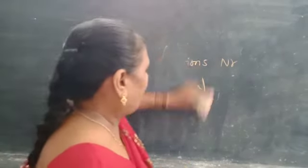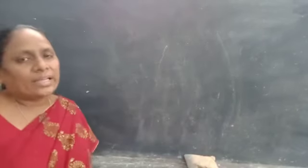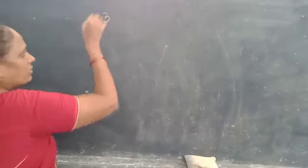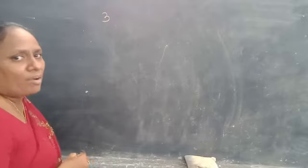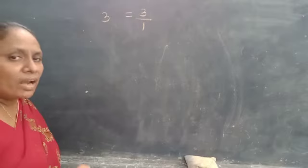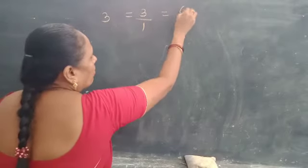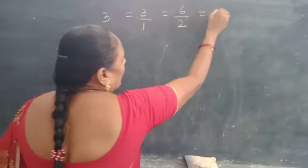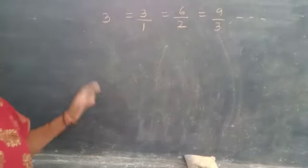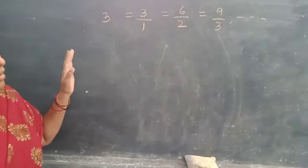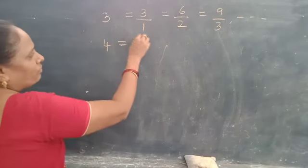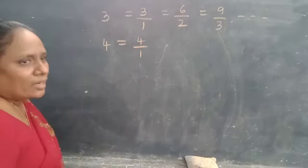How do we write natural numbers, whole numbers, and integers in the form of rational numbers? Take the natural number 3. This can be written as a rational number by writing 1 as the denominator: 3 by 1. It can also be written as 6 by 2, or 9 by 3, and so on — all equivalent to 3. Like that, we can write any natural number as a rational number by writing 1 as the denominator.